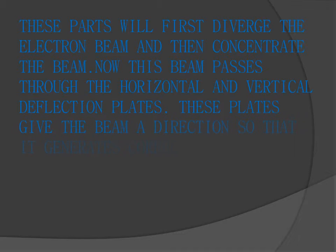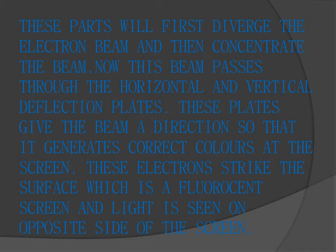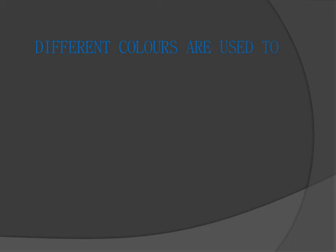Now this beam passes through the horizontal and vertical deflection plates. These plates give the beam a direction so that it generates correct colors at the screen. These electrons strike the surface, which is a fluorescent screen, and light is seen on the opposite side of the screen. Different colors are used to generate shades of all colors.